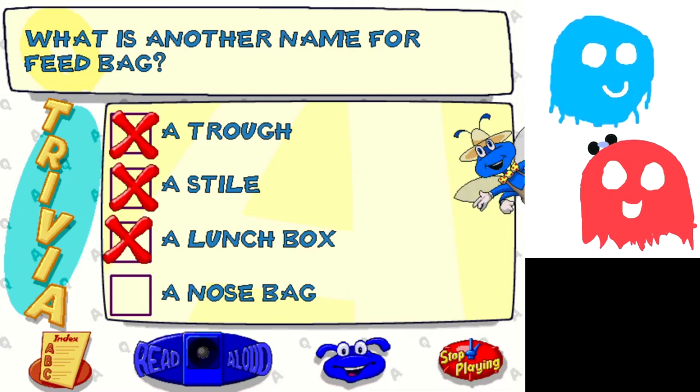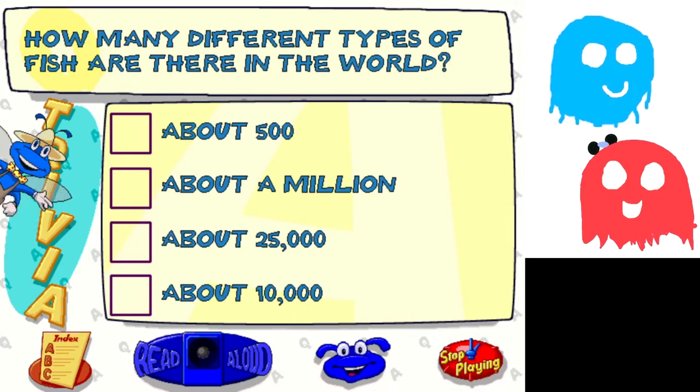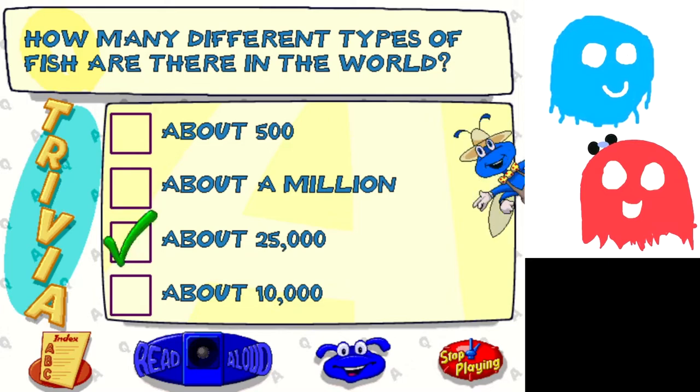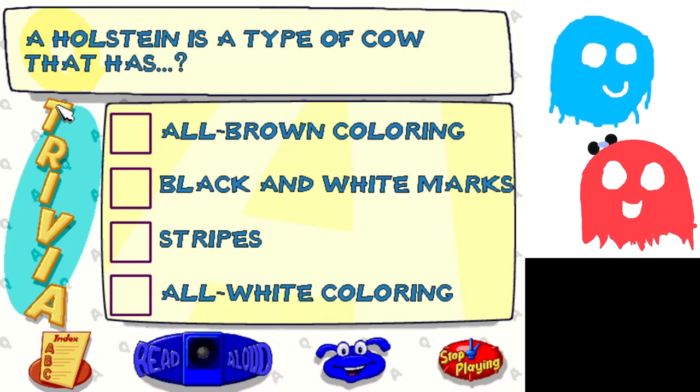Try this question. How many different types of fish are there? More than 500. A million wouldn't surprise me honestly, because we haven't seen the bottom of the ocean. A million is so big though. I'd say closer to 25,000. Nice! Holstein's the type of cow that has black and white marks. Yee-haw! You got it!